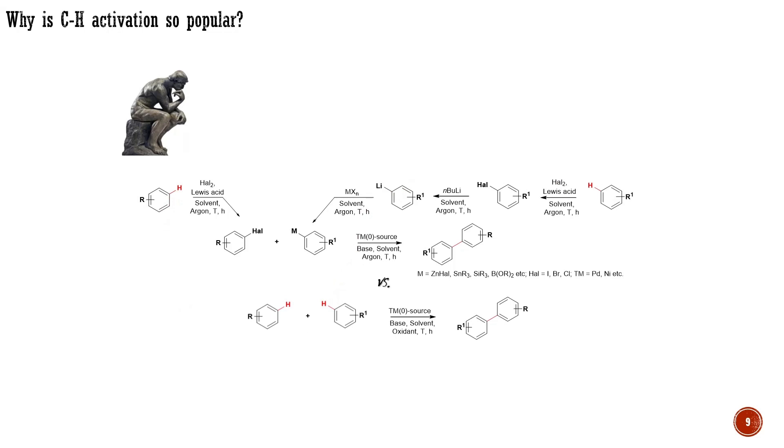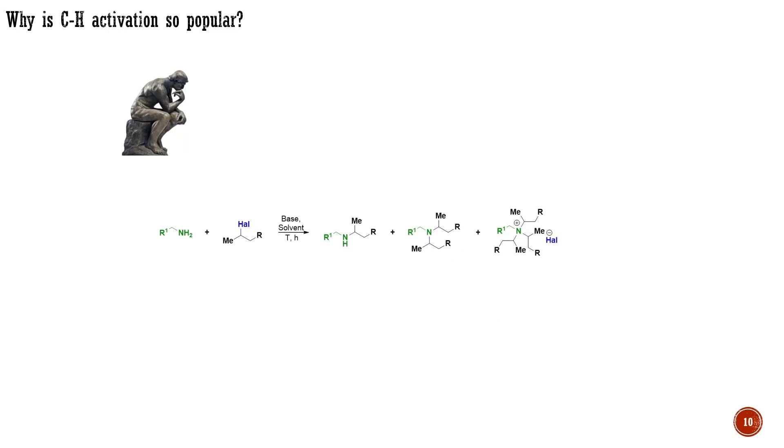On the other hand, modern developments in C-H activation allow the direct assembly of unfunctionalized arenes. As a second example, let's consider the preparation of secondary amines. The traditional approach involves the use of alkyl halides, which must be isolated from other isomers formed during radical halogenation. This is not an easy task.